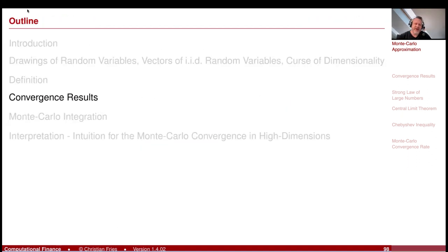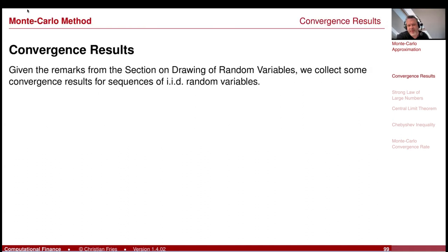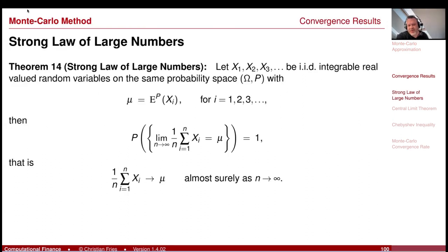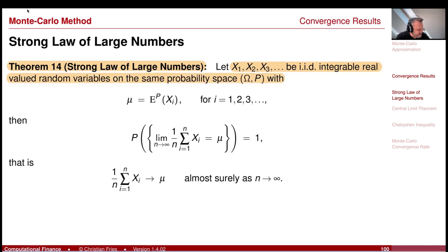Let's discuss the Monte Carlo convergence results. The first thing to recall is the strong law of large numbers. Let x_1, x_2, x_3, and so on be iid integrable real-valued random variables on the same probability space. They all have the same expectation mu. The claim is that the limit of the Monte Carlo approximation is equal to mu.